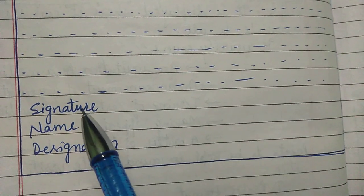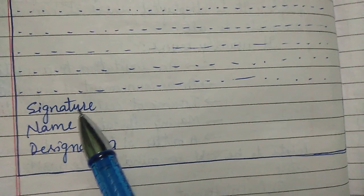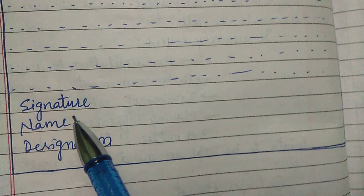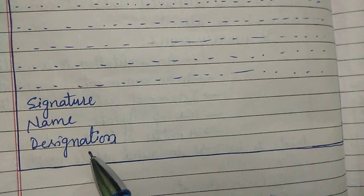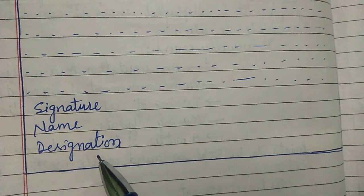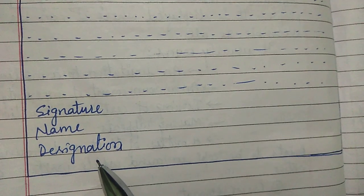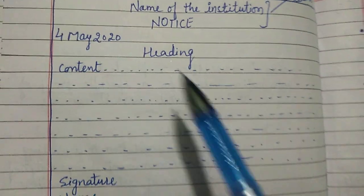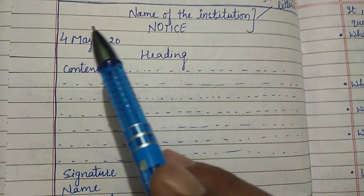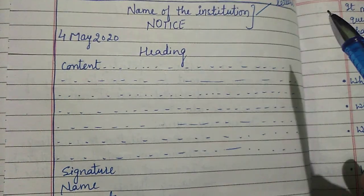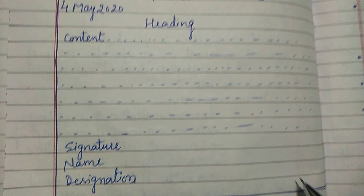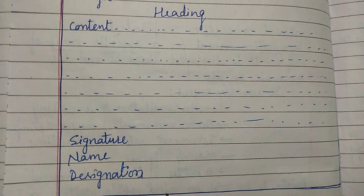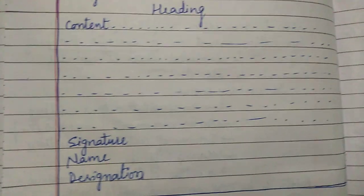After the content, to the left side, the signature, name, and designation of the notice writer are to be written. Most importantly, don't forget to put the notice inside a rectangular box — it is necessary to keep the notice in a box.